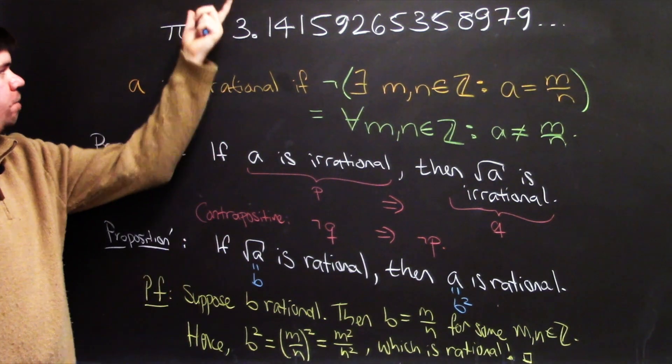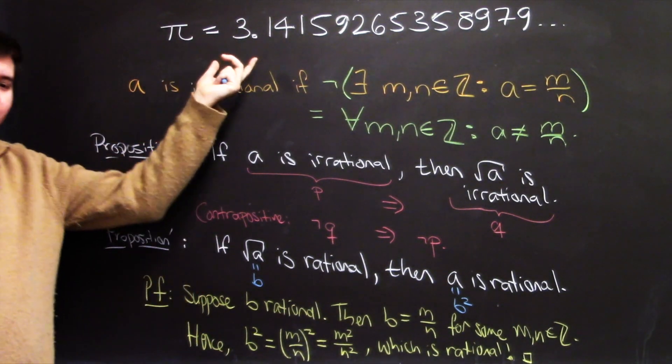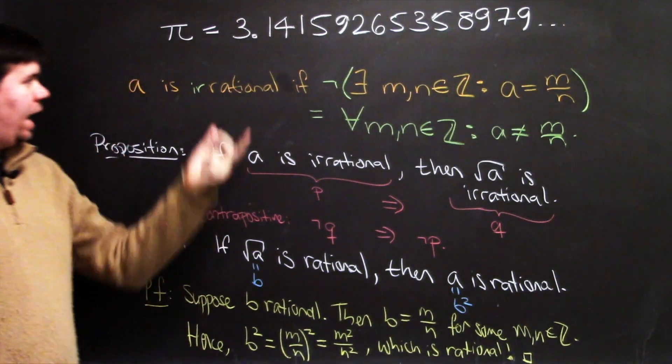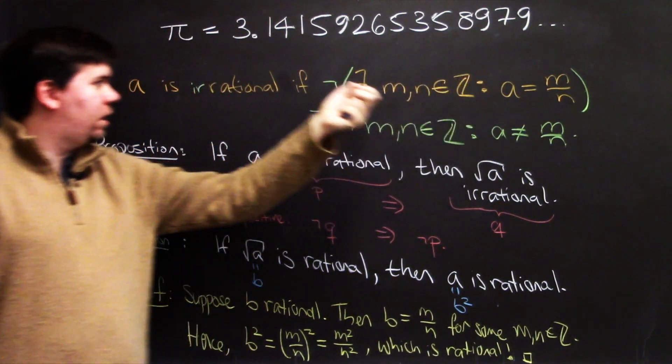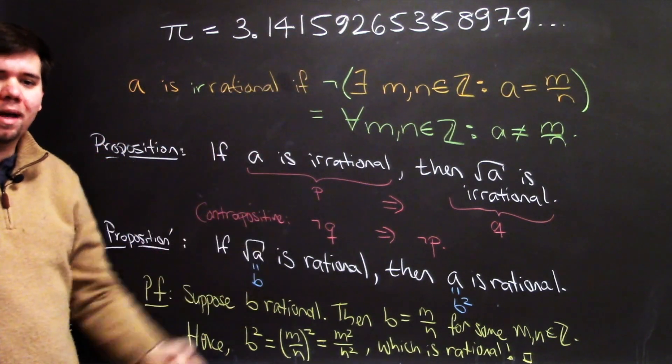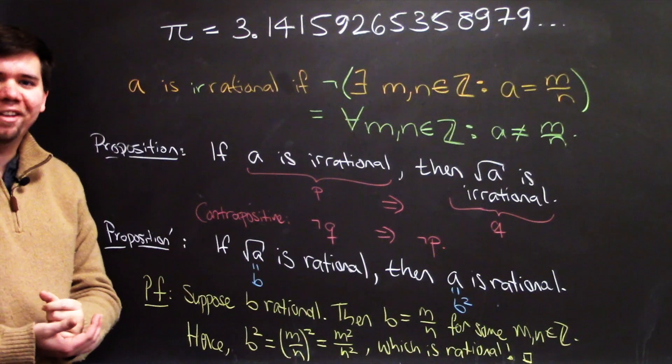Therefore, we've shown the square root of pi is irrational. That is, assuming we take for granted that pi itself is irrational. Now, you might be wondering at this point, well, how do we actually know that pi is irrational? How do we know this doesn't stop at some point? That there isn't some fraction expressed pi as. That's a much better story, a much longer story, and we'll have to do that one another time.